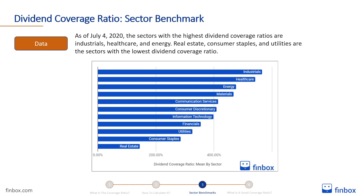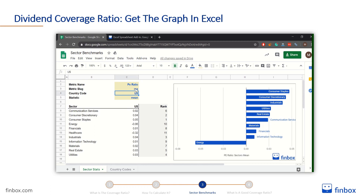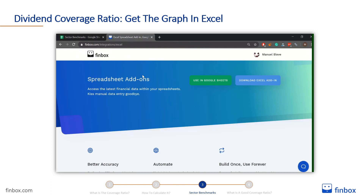You can have up-to-date stats and graphs like that directly in Excel or Google Spreadsheets with the Finbox Excel add-in. To download it for free, go to finbox.com/integrations/Excel. After you download the Excel add-in, you can download the sector benchmark model using the link in the description below.